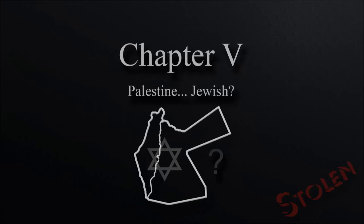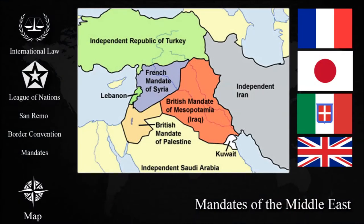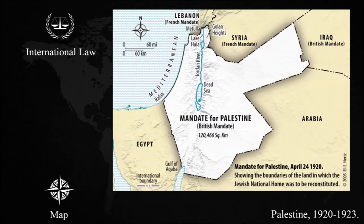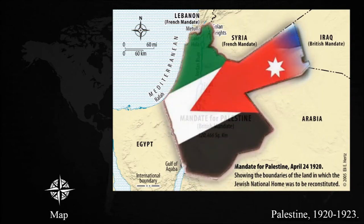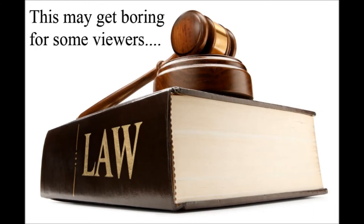Hello everybody. Today we'll talk about Palestine that was defined by the League of Nations in 1920. In today's video I would like to talk about the different aspects of Palestine — not its borders or legitimacy in terms of international law, but rather about the intent of its creation. We know that the mandates were temporary administrations until the administered areas would proclaim independence. But what was Palestine supposed to become? A Jewish state or an Arab state or maybe both? In order to understand these things we need to examine some legal documents.